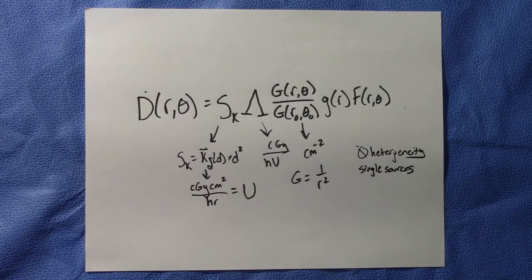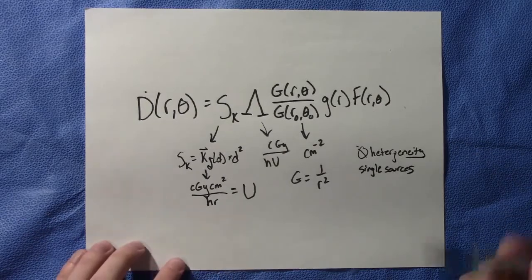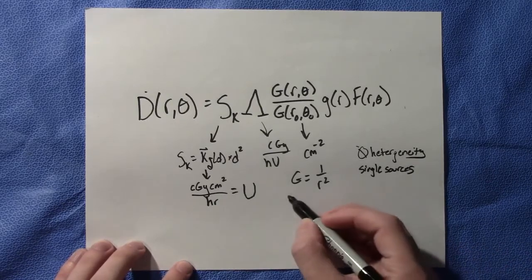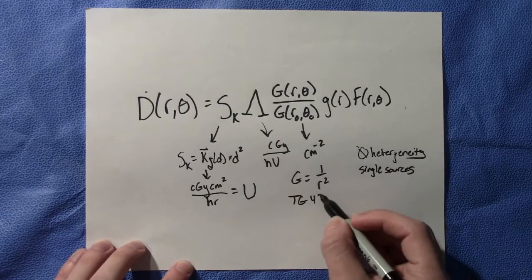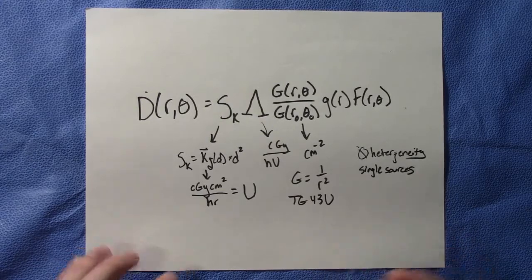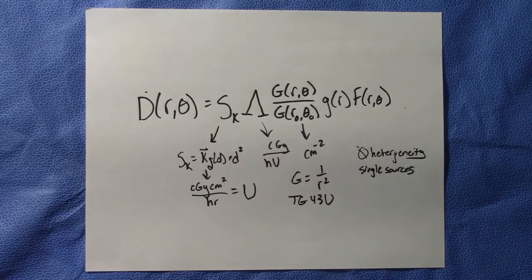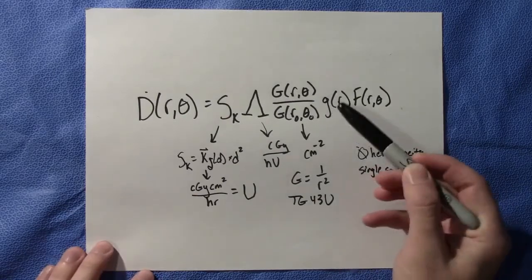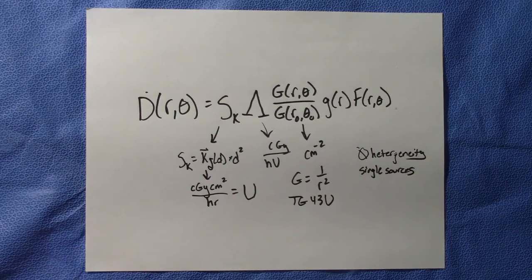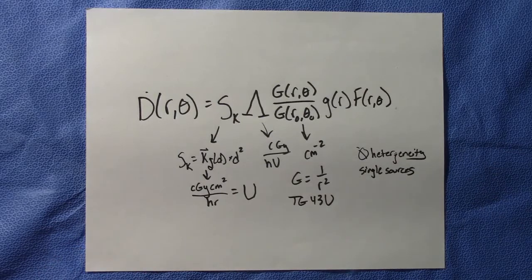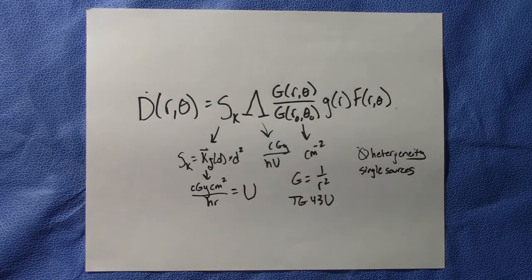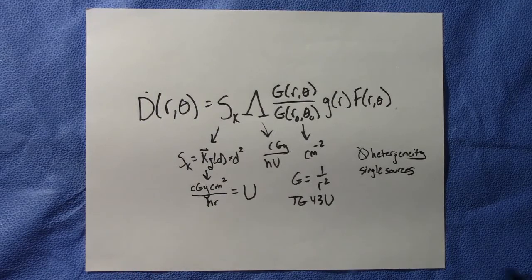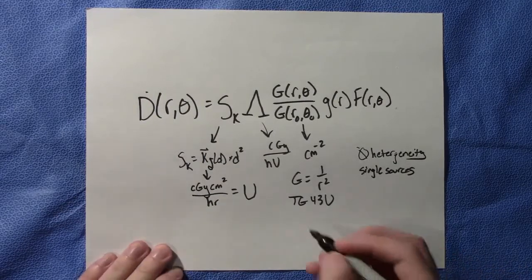So final thing, a couple things I think that may be important to just know for your curiosity or for further background. So there is a task group 43U, and so that just includes extra guidance in extrapolating numbers for a lot of these factors like the radial and anisotropy function. And there's also a slightly different definition of air kerma strength if you want to look into that. The definition is slightly different, but there is somewhat of a difference there.